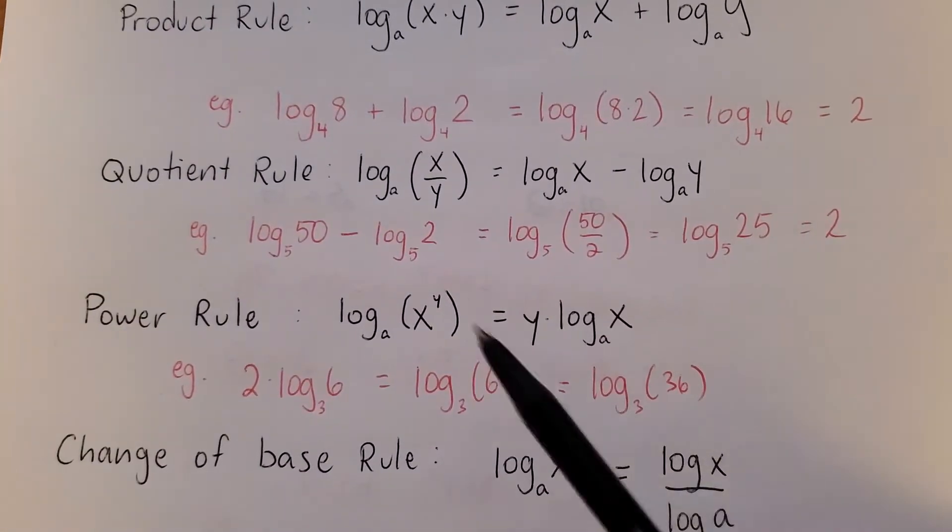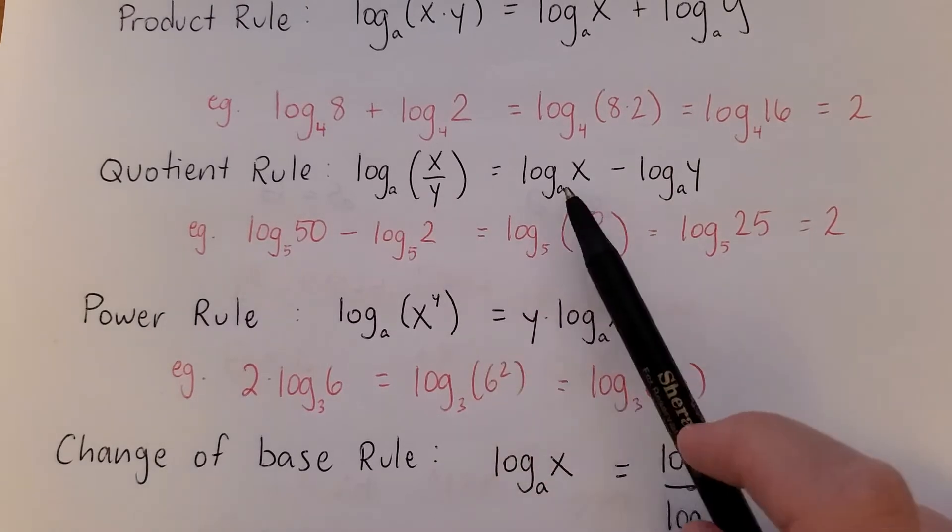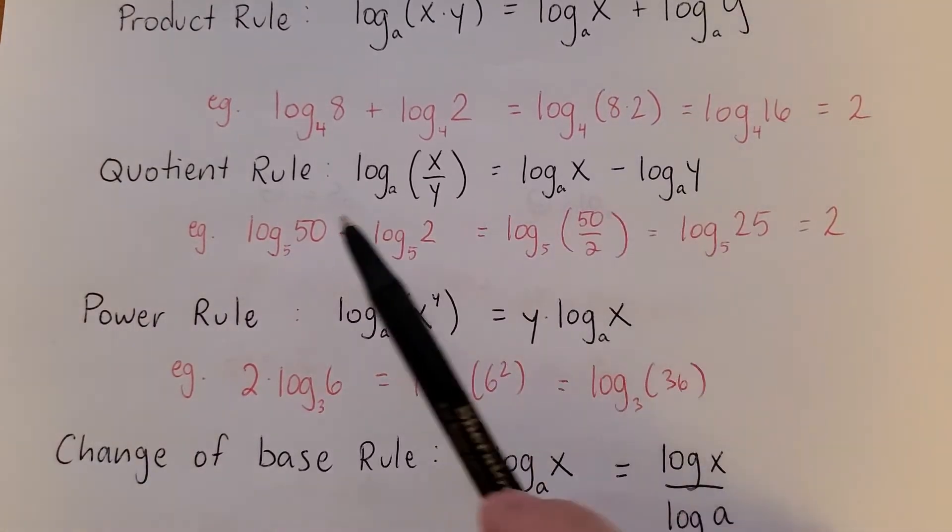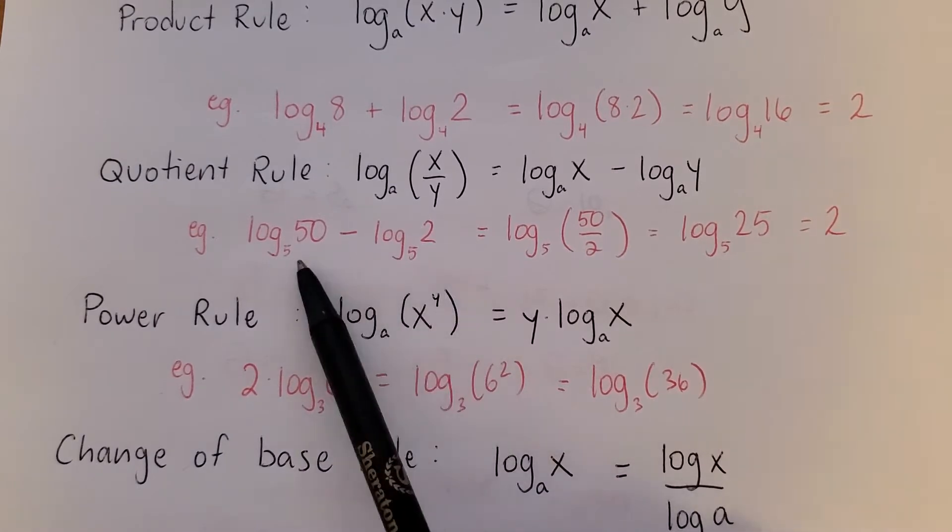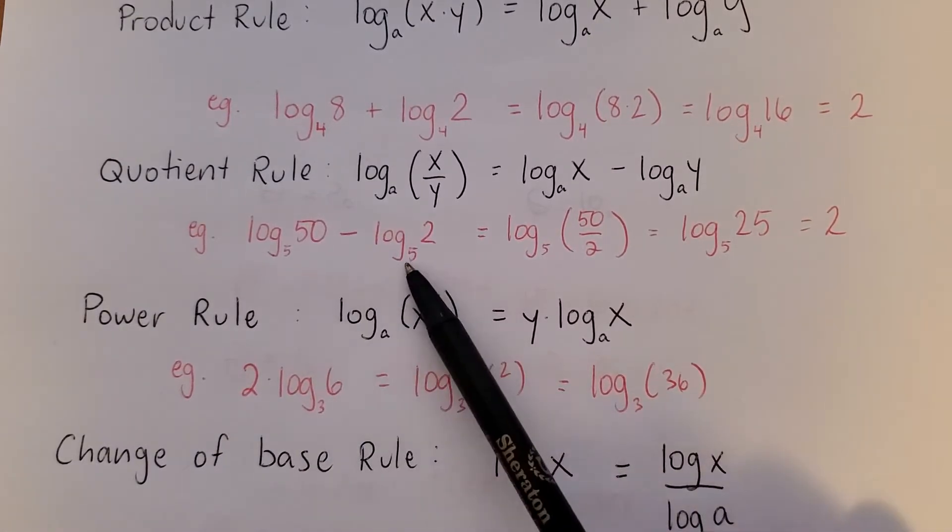Quotient rule is really similar. If you're taking the log of a quotient, you can subtract those logs. But typically it's more useful in the other direction. So I'm subtracting these two logs. I have no idea how to calculate these off the top of my head.